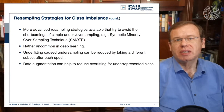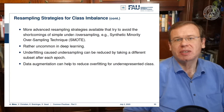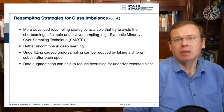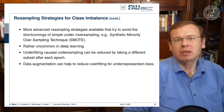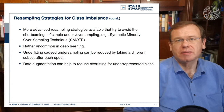Underfitting caused by undersampling can be reduced by taking a different subset after each epoch — this is quite common. You can also use data augmentation to help reduce overfitting for underrepresented classes.